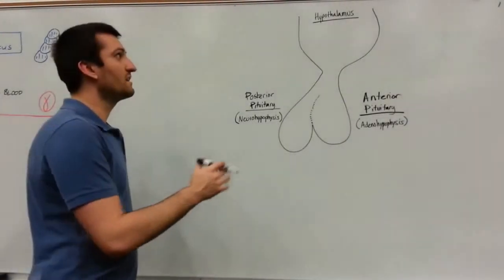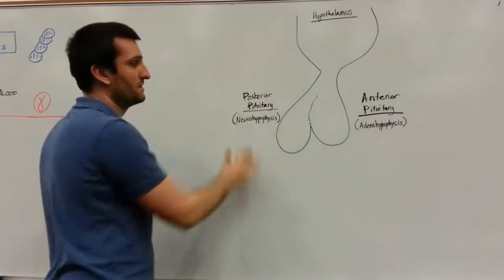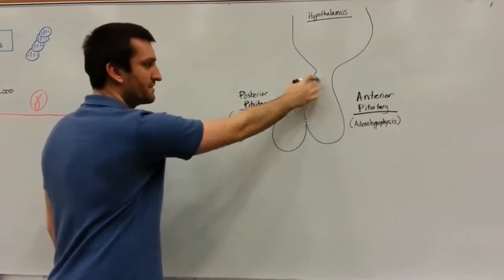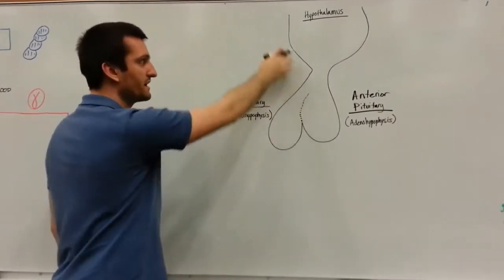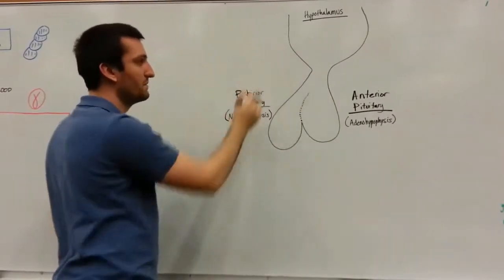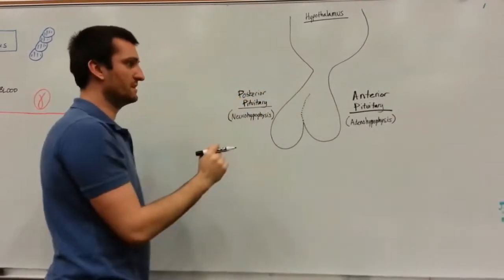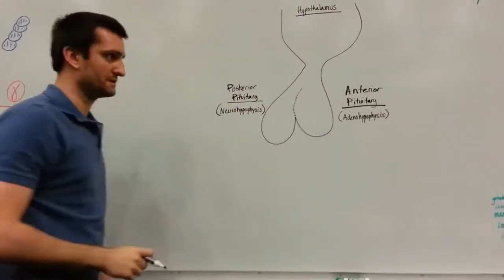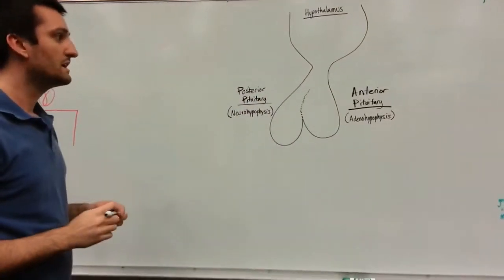To start explaining, we have the hypothalamus, and we've got a stalk here that's connecting the pituitary gland with the hypothalamus. This is going to be called the infundibulum, and that's just another name for a stalk connecting the two.